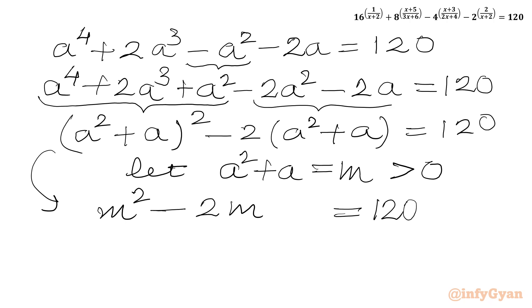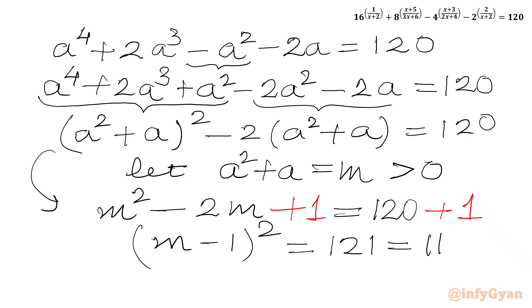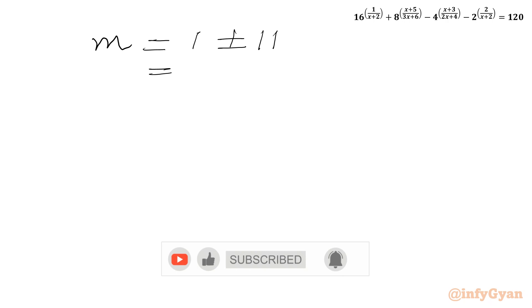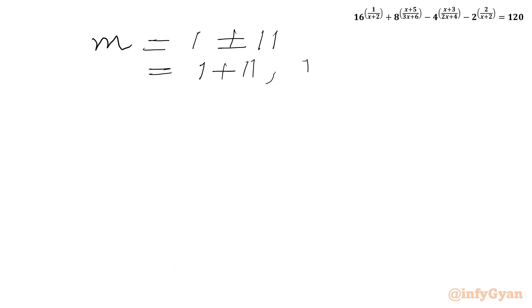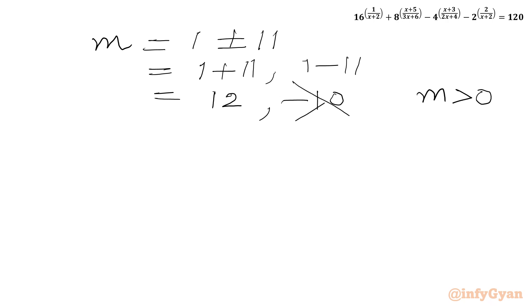Now I will add 1 to both sides. LHS becomes the perfect square (m minus 1) whole squared. RHS is 121 which is the square of 11. Now we will consider square root of both sides. m minus 1 will be equal to plus or minus 11. By adding 1 to both sides, we will get m equals to 1 plus or minus 11, so two values: 12 and minus 10. The condition on m was m must be positive, so we reject minus 10. The accepted value of m is m equal to 12.